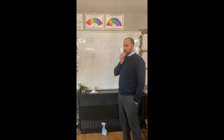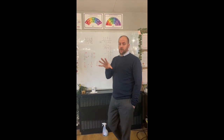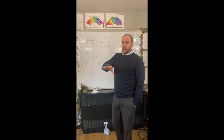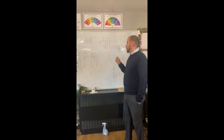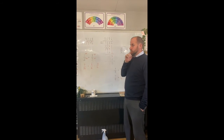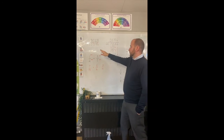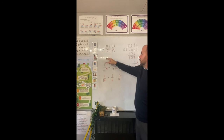Autumn 2 in maths - we're going to continue our journey with operations, moving on to division. We have two different methods for division. We use one specifically when we're dividing by a one-digit number.